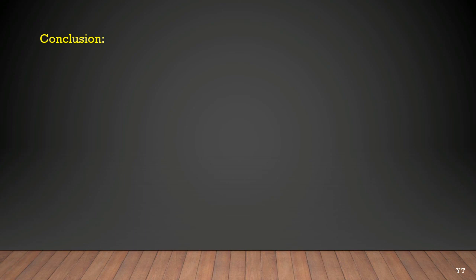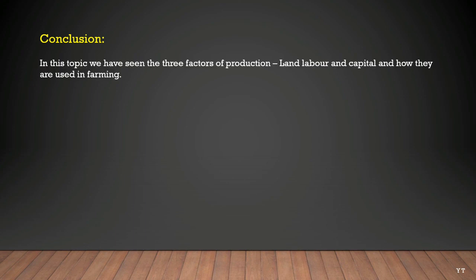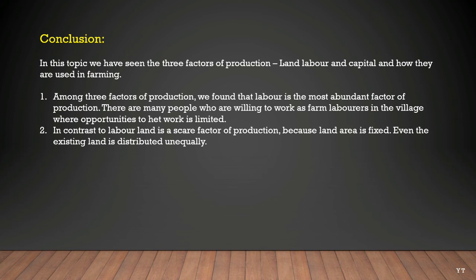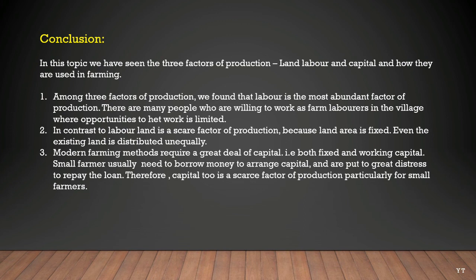In conclusion, we have seen the three factors of production — land, labor, and capital — and how they are used in farming. Labor is the most abundant factor of production; many people are willing to work as farm laborers but opportunities are limited. In contrast, land is a scarce factor because its area is fixed and is distributed unequally. Modern farming methods require a great deal of both fixed and working capital. Small farmers usually need to borrow money and face great distress in repaying loans, making capital also a scarce factor of production, particularly for small farmers.